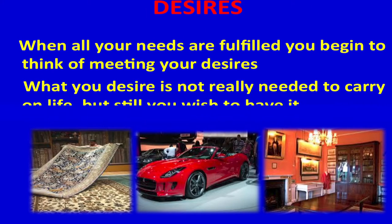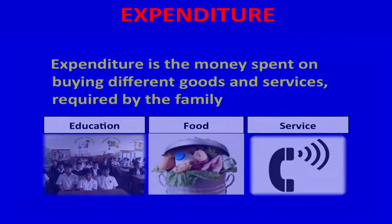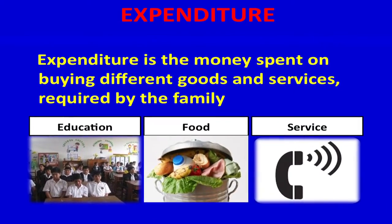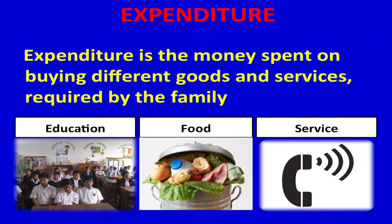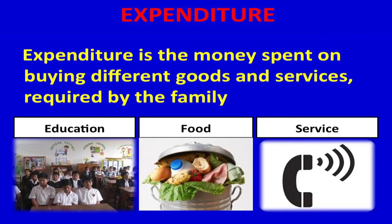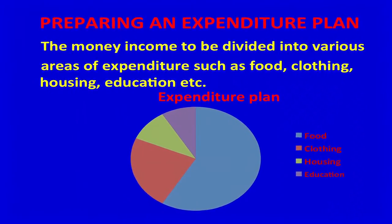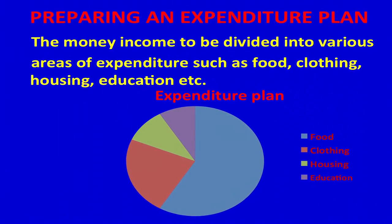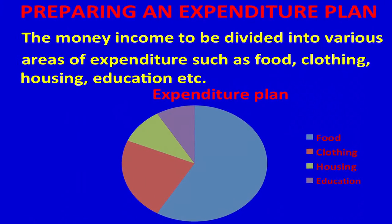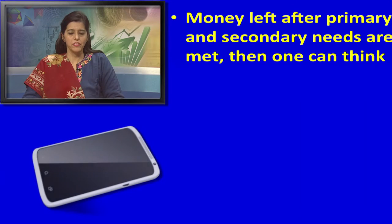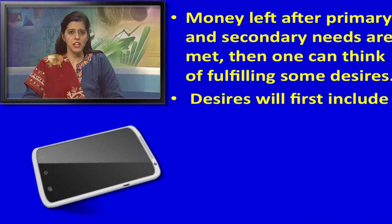What you desire is not really needed to carry on life, but still you wish to have it. Expenditure is the money spent on buying different goods and services required by the family. When preparing an expenditure plan, the money income is to be divided into various areas of expenditure such as food, clothing, housing, education, etc.